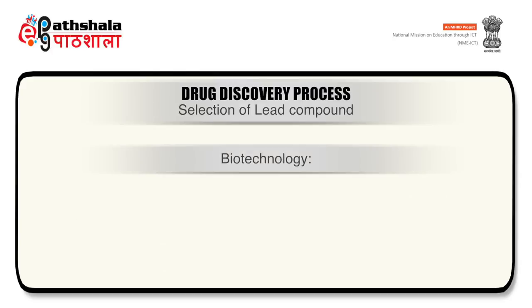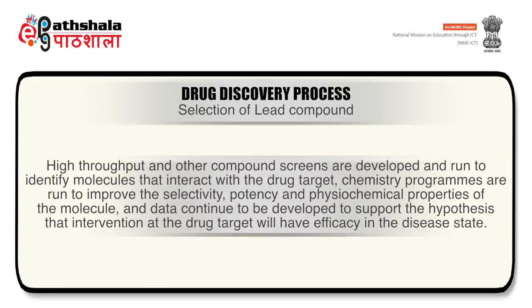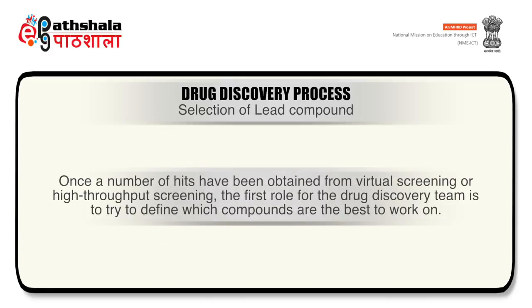The last way to find a lead compound is by biotechnology. Scientists can also genetically engineer living systems to produce disease-fighting biological molecules. High-throughput and other compound screens are developed and run to identify molecules that interact with the drug target. Chemistry programs are run to improve the selectivity, potency and physicochemical properties of the molecule, and data continue to be developed to support the hypothesis that intervention at the drug target will have efficacy in the disease state. Once a number of hits have been obtained from virtual or high-throughput screening, the drug discovery team works to define which compounds are the best to work on.